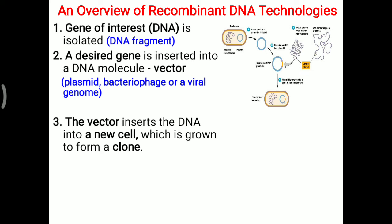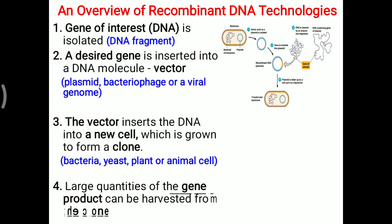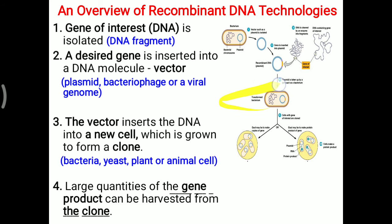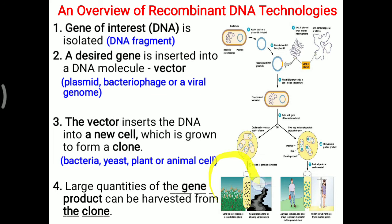After the desired gene is fused with the vector, the vector inserts the DNA into a new cell. That new cell is grown to form multiple cells of the same type — that is clone formation. The insertion is done mostly into bacteria, yeast, plant, or animal cells. Large quantities of the gene product can then be harvested from the clone and utilized for agriculture, industrial purposes, or disease prevention.